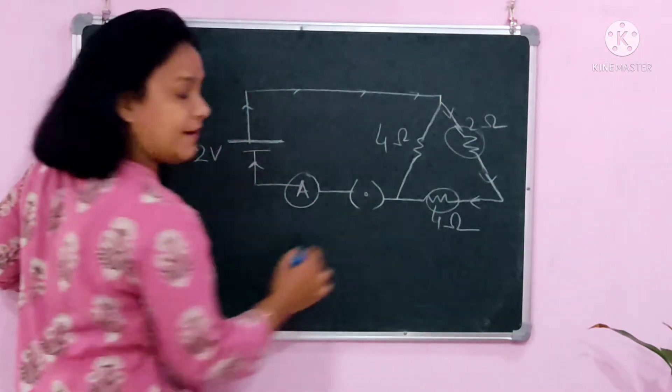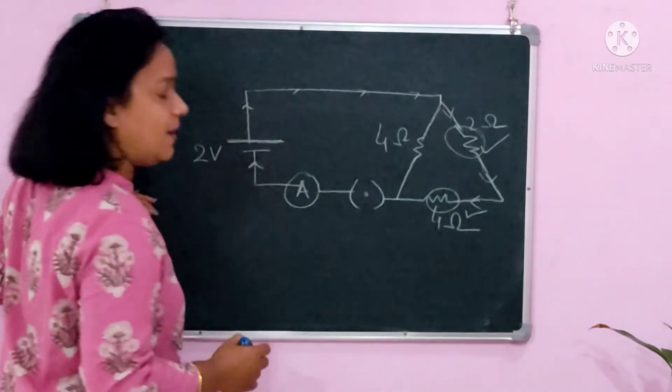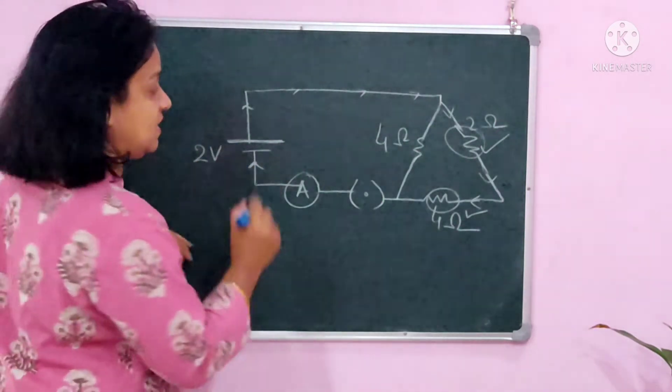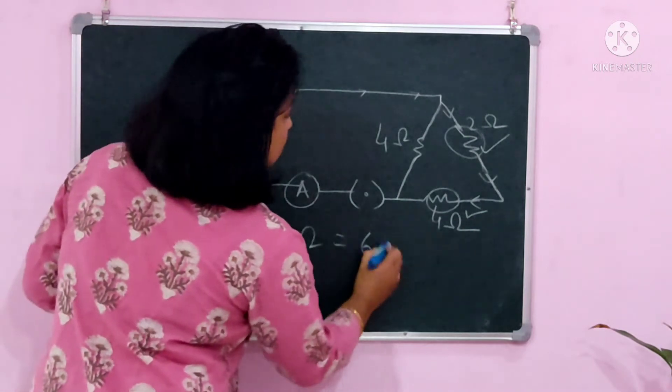When you start following the path of current, you meet these resistances on the way. That means these two are in series with each other. So you simply add them and you will get the total resistance.